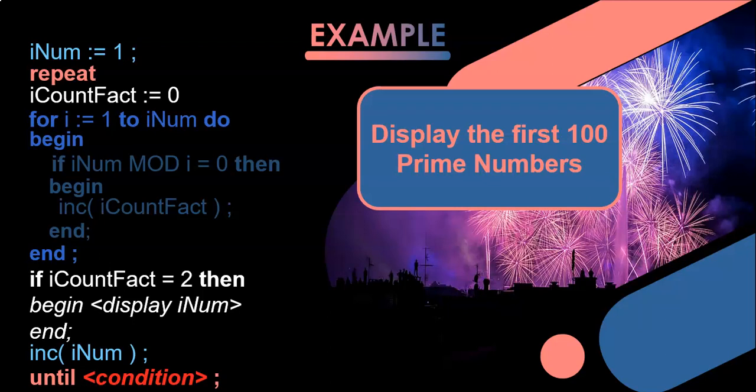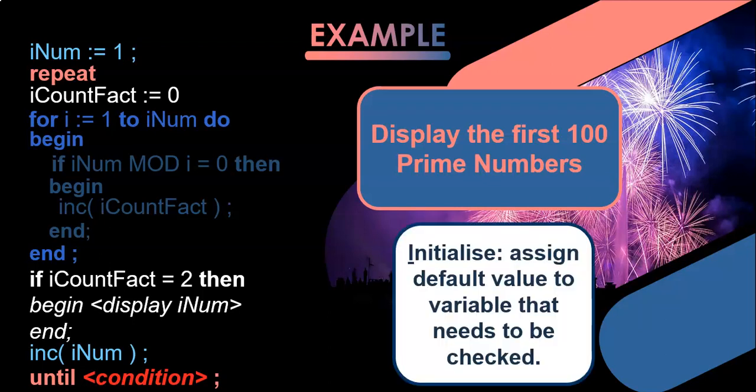We've got our sequencing going. But how do we know when to stop? We're going to apply our RCT principle because we're using a repeat loop. We need to initialize it. We want to find the first hundred prime numbers — in other words, we count the prime numbers. So I'm going to make a rCountPrime variable, initialized to zero because we've found no prime numbers.